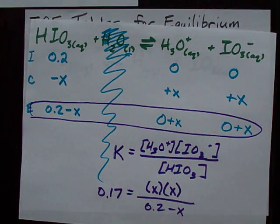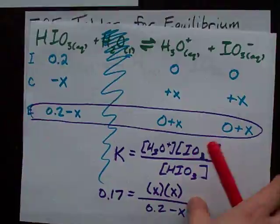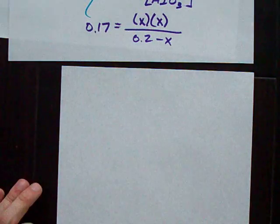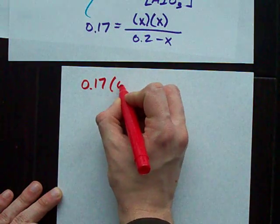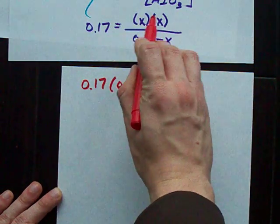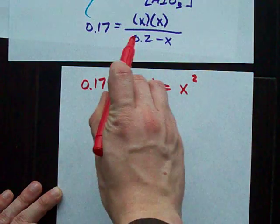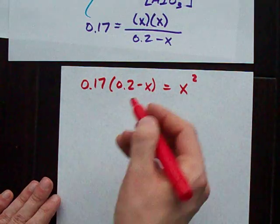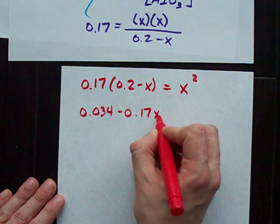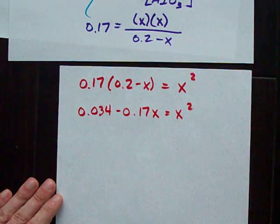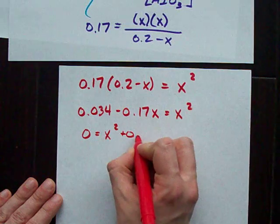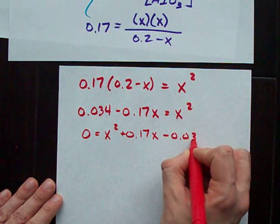The easiest way to do that is probably with the quadratic formula. So let me get a little more paper out here. I'll keep that where you can see it. What I'm going to do is multiply the left-hand side by the denominator. See how X times X becomes X squared? And I took my denominator and multiplied it on the other side. Multiply that through, you end up with 0.034 minus 0.17X. And what I'm going to do is move everything to one side of my equation. X squared plus 0.17X minus 0.034.